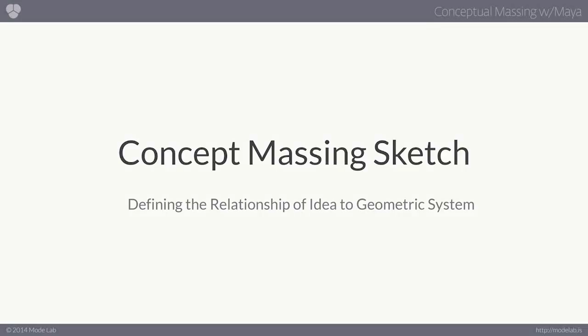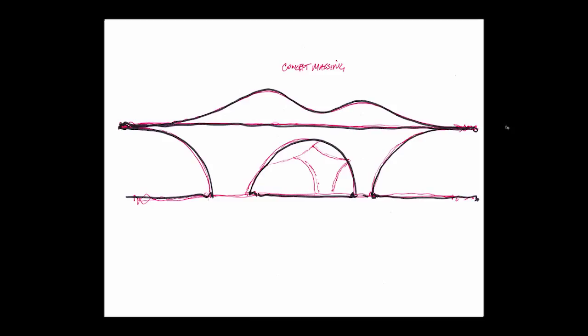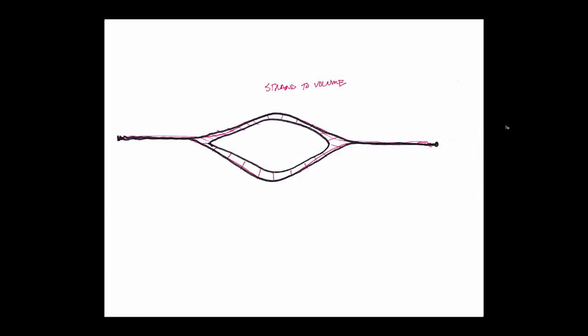So let's start off by looking at our concept massing sketch. Here we can see the piece of geometry we're going to be making today. Conceptually the massing boils down to a few ideas, one is the exploration of strand to volume, so the transition of how a planar surface becomes part of a volume.